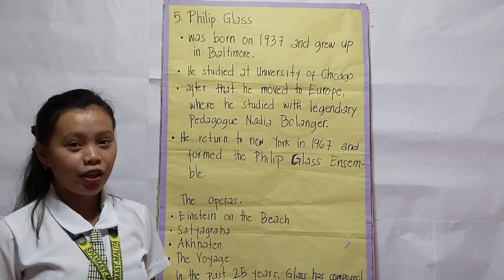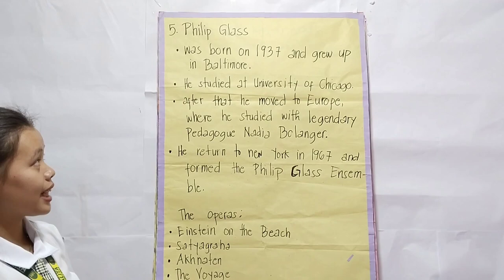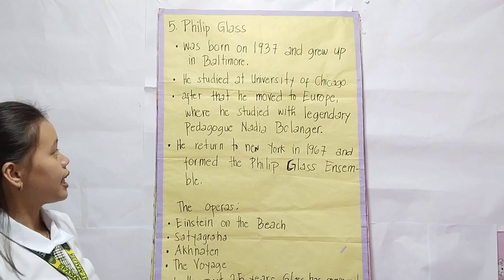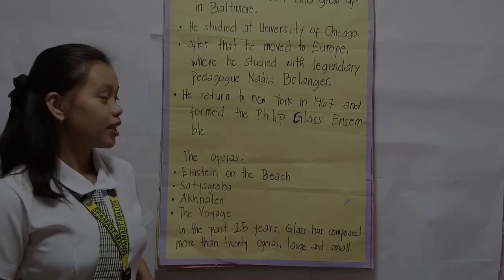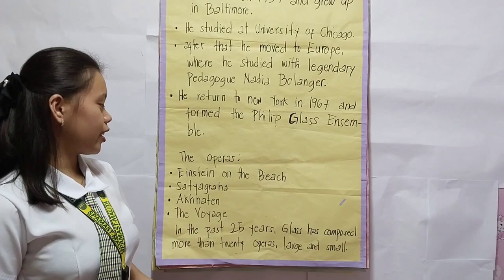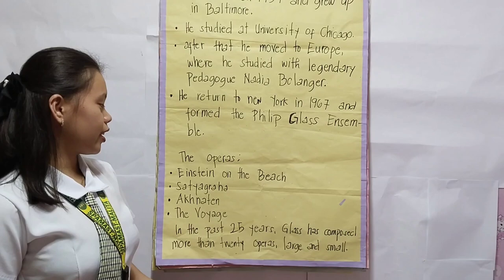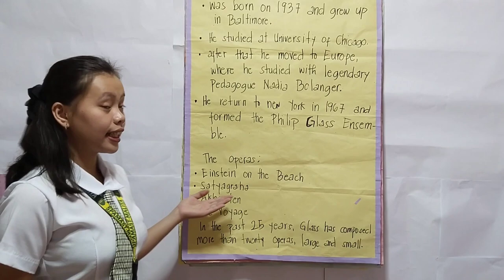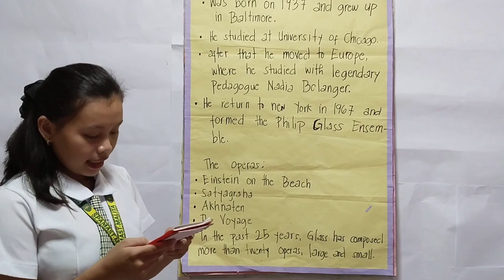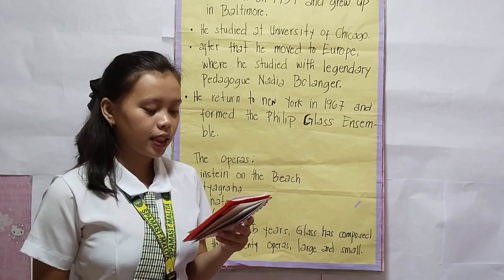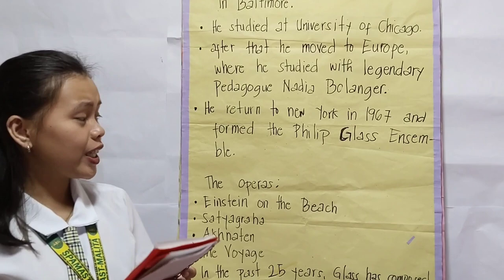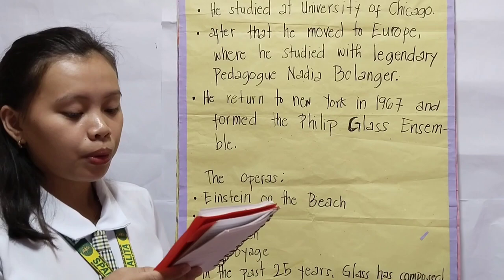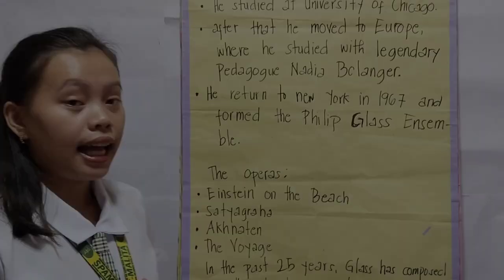Now let's move forward to Philip Glass. Philip Glass was born in 1937 and grew up in Baltimore. He studied at the University of Chicago, then moved to Europe where he studied with legendary pedagogue Nadia Boulanger. Some operas of Philip Glass include Einstein on the Beach, Satyagraha, Akhenaten, and The Voyage. Einstein on the Beach (1976) is an opera in four acts for ensemble, chorus, and surrealist staging with American designer Robert Wilson, first premiered by the Philip Glass Ensemble conducted by Michael Riesman at the Festival d'Avignon in France on July 25, 1976.